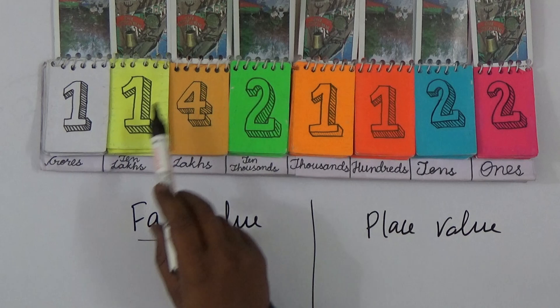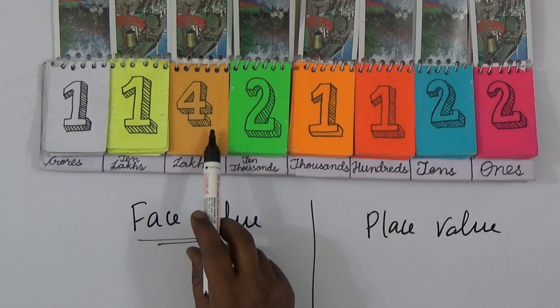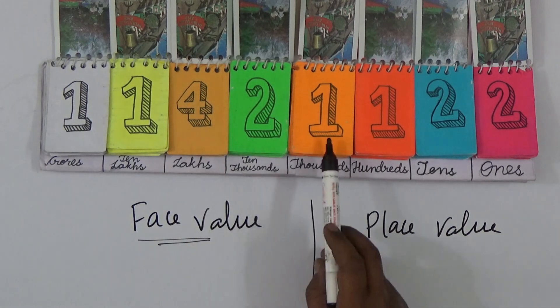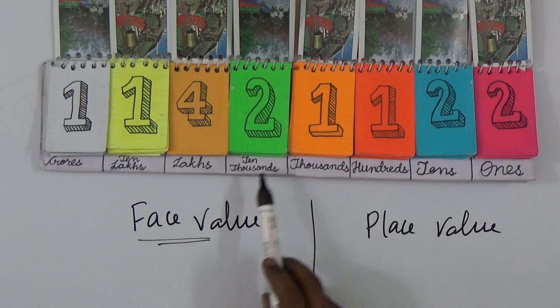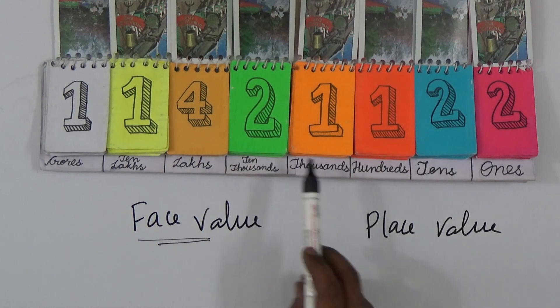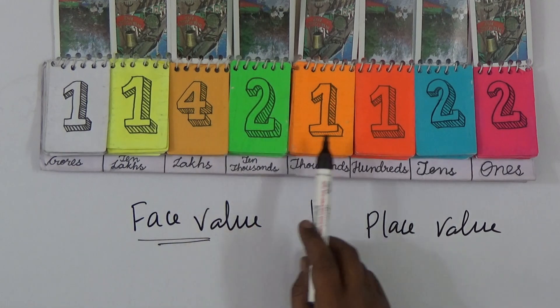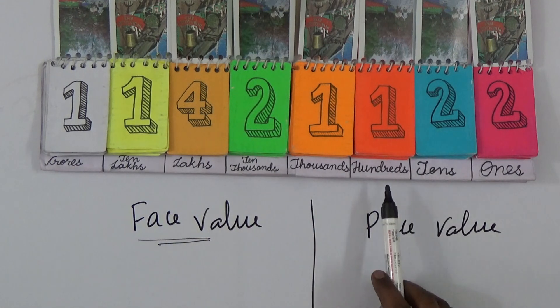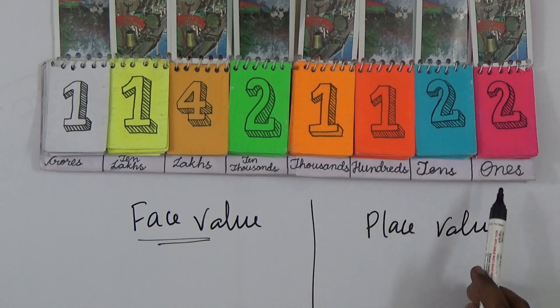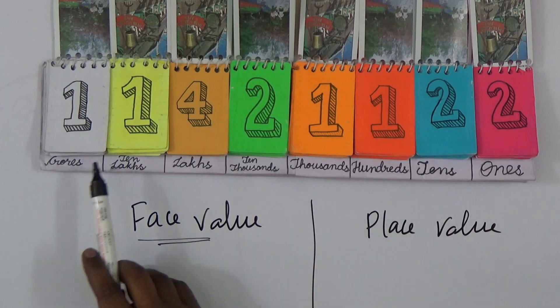One crore 14 lakhs - this is ten thousands value, this is one thousands, so two ten thousands and one one thousand, that is twenty one thousand. So one crore 14 lakh 21 thousand, and one hundreds, two tens, and two ones, so twenty two. Finally this number is 1 crore 14 lakhs 21,122.